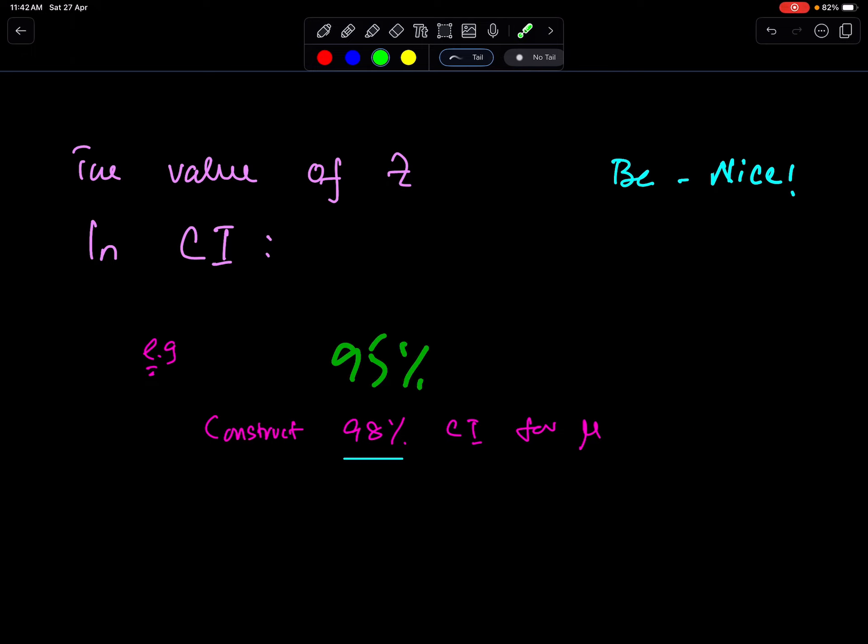What if we had 95% here? Then this would be 95%. 100 minus 95 makes 5%. Divided by 2 makes 2.5% each. So this is 2.5 and this is also 2.5.